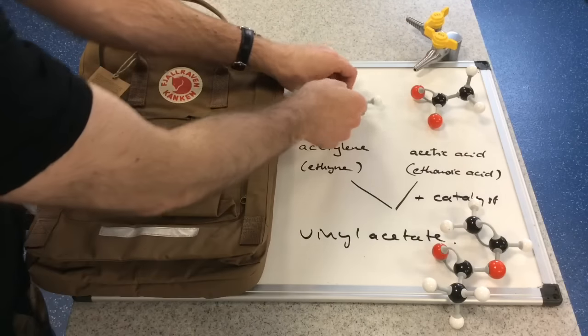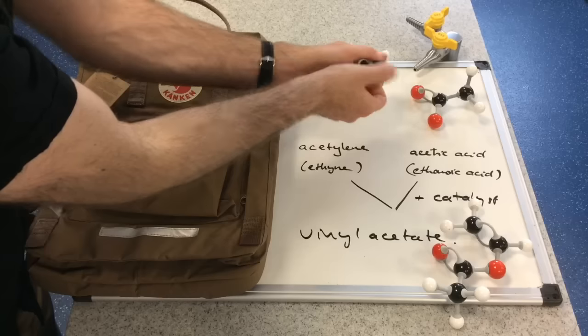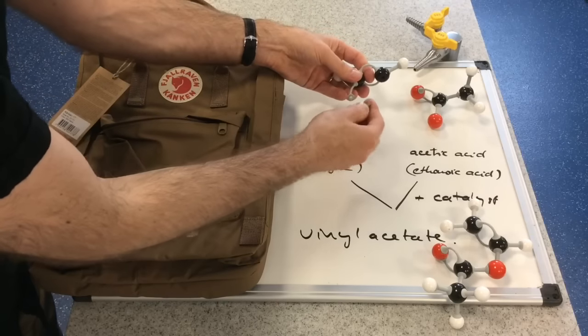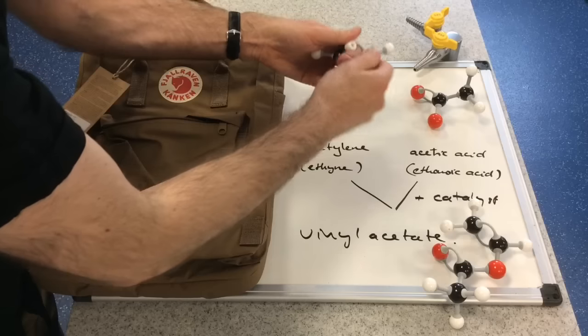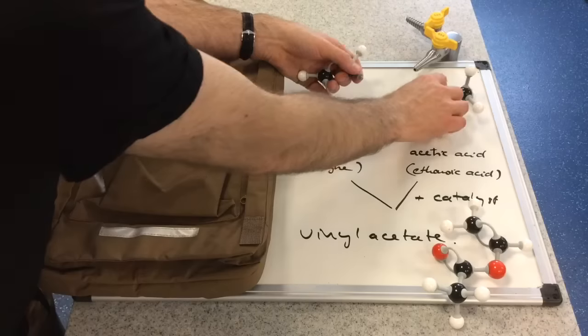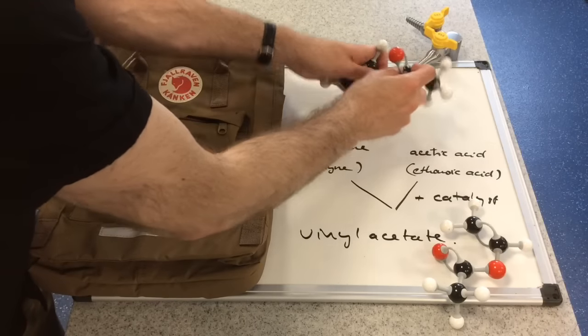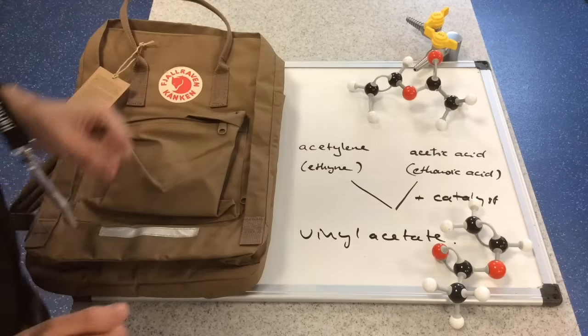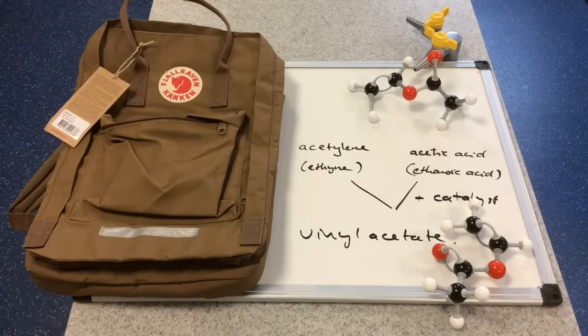And the hydrogen must have gone where this triple bond has opened up. So we've got the hydrogen on there. Let's put that bond back in there. Now in terms of mechanisms, it's probably far more complicated than this. But for the purpose of the video, that'll do. So there's the vinyl acetate.